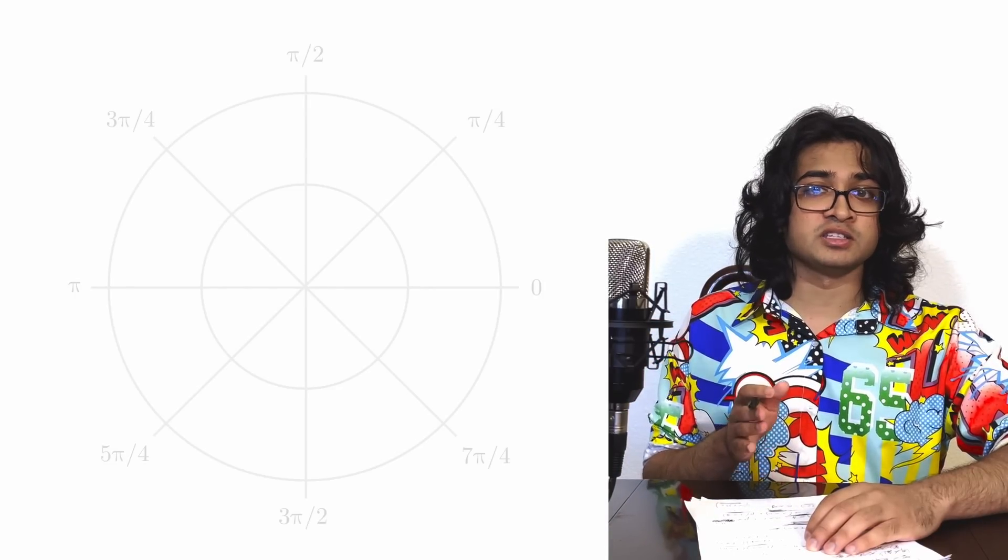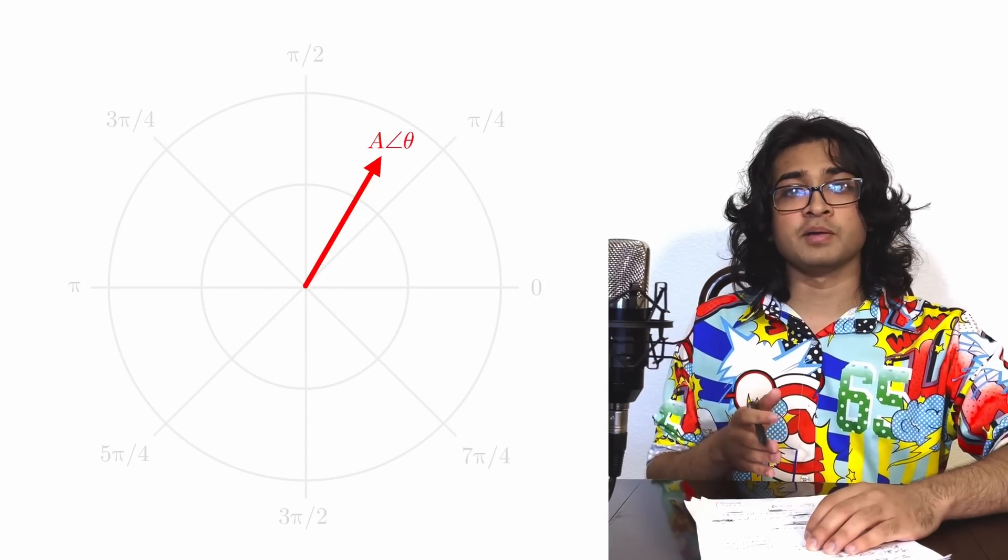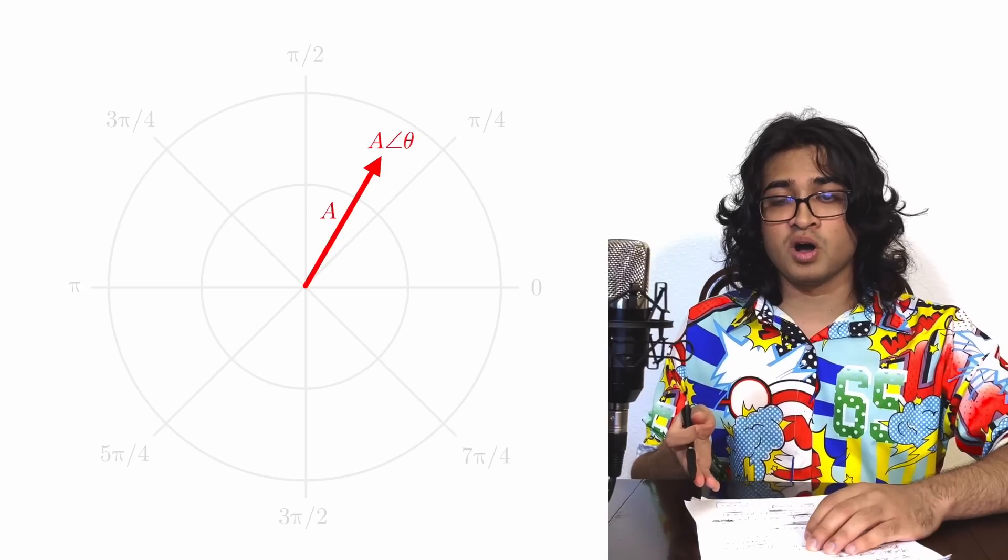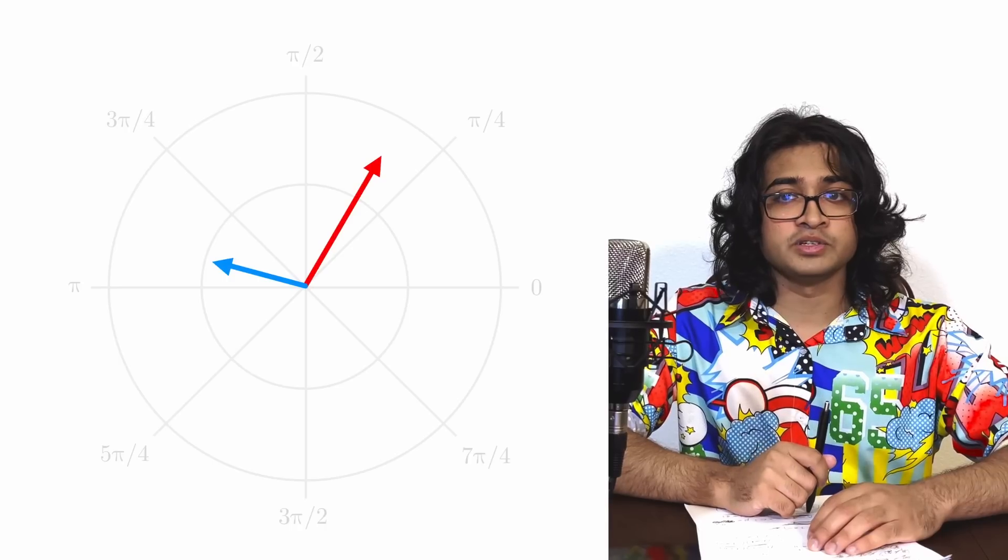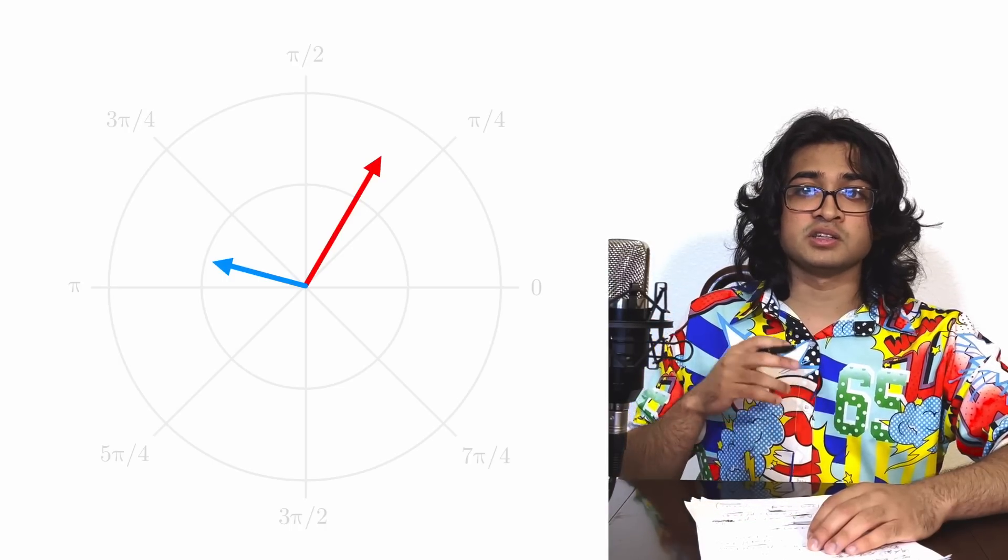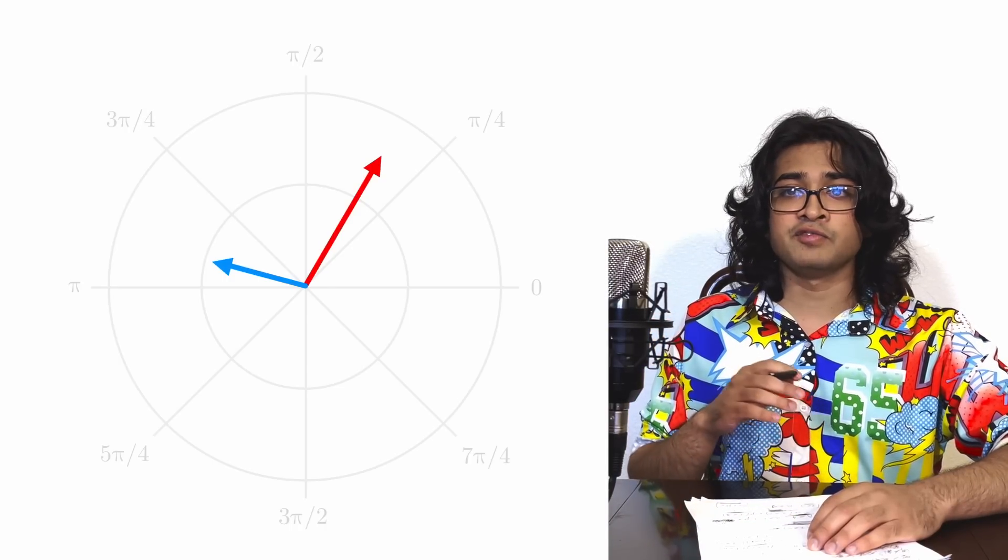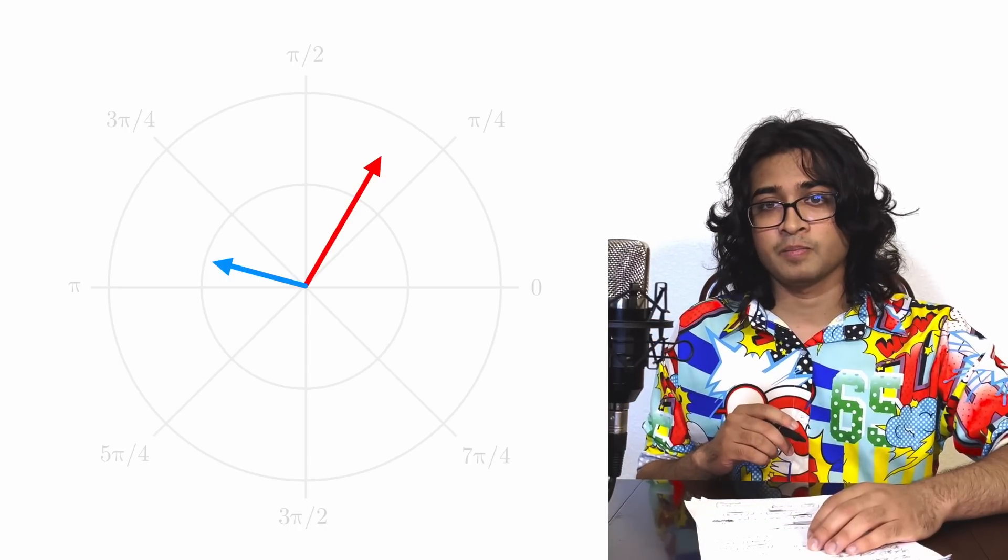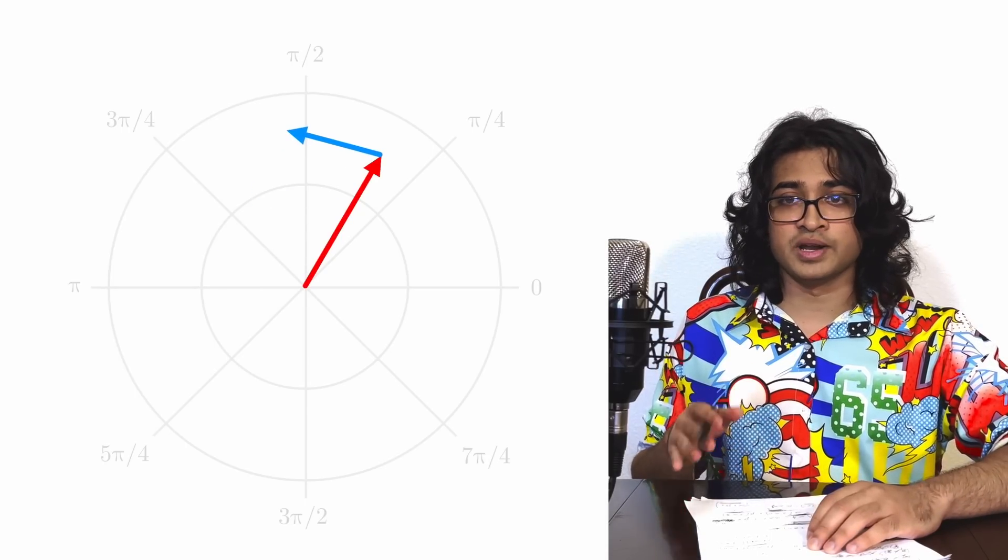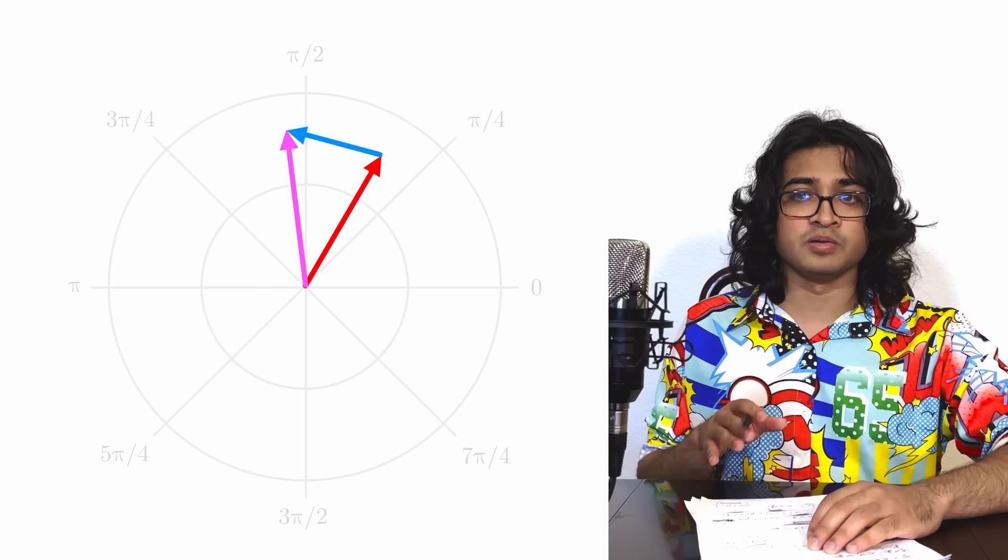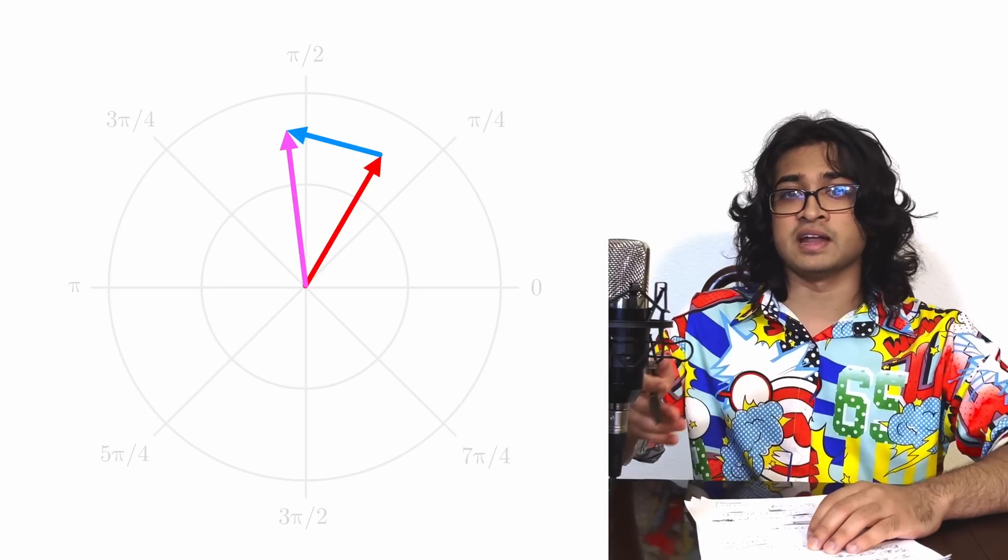Since our polar objects have magnitude and phase, we can visualize them as arrows on a 2D plane. A polar object basically tells you how far to walk from the origin and in what direction. Adding two polar objects means that we want to follow the directions of the first polar object and then follow the directions of the second polar object. Geometrically, this means starting the second arrow where the first one ends, and the sum is an arrow that goes from the beginning of the first arrow to the end of the second.